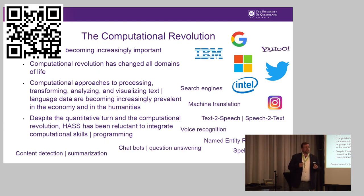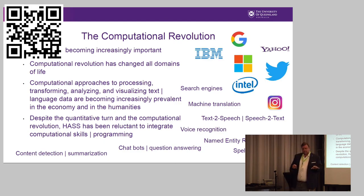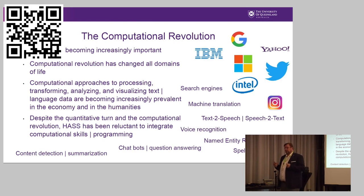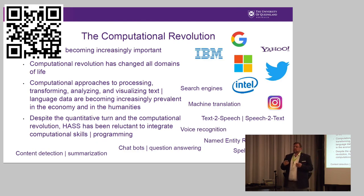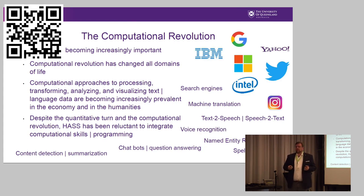Despite the quantitative turn — the fact that statistical methods are becoming more and more prevalent in our field — that is not to the same extent true for a computational turn. When you look at statistical methods, they've increased in frequency, but it's not the same for programming or computational skills. Not only our field, but the humanities overall have remained to a certain extent more traditional. While we have integrated training on tools and how to do corpus linguistics with certain digital methods, I think there's room for improvement.